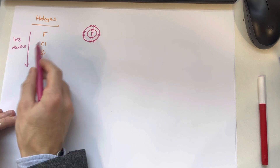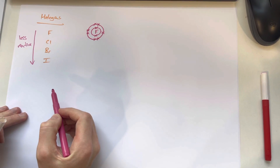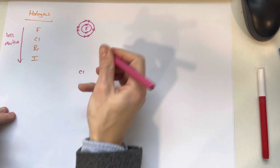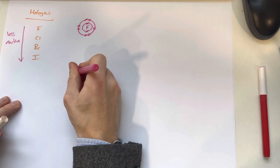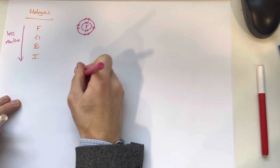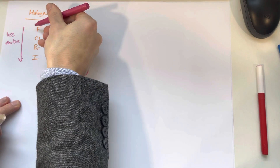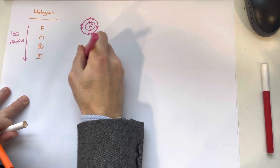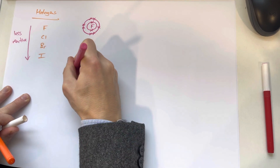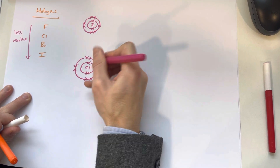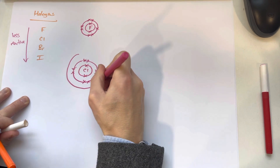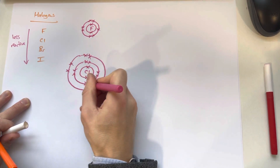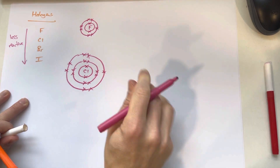Let's compare it to chlorine, one underneath it. Chlorine will have seven electrons in the outer shell, but because it's one further down it's in the next period, which means it's got one more shell. So it's bigger — you can see it's a bigger atom.